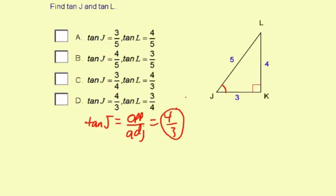Now let's look at the tangent of L. So the tangent of L is the side opposite divided by the side adjacent of angle L. Now the side opposite angle L is 3. So it's going to be 3 over something.